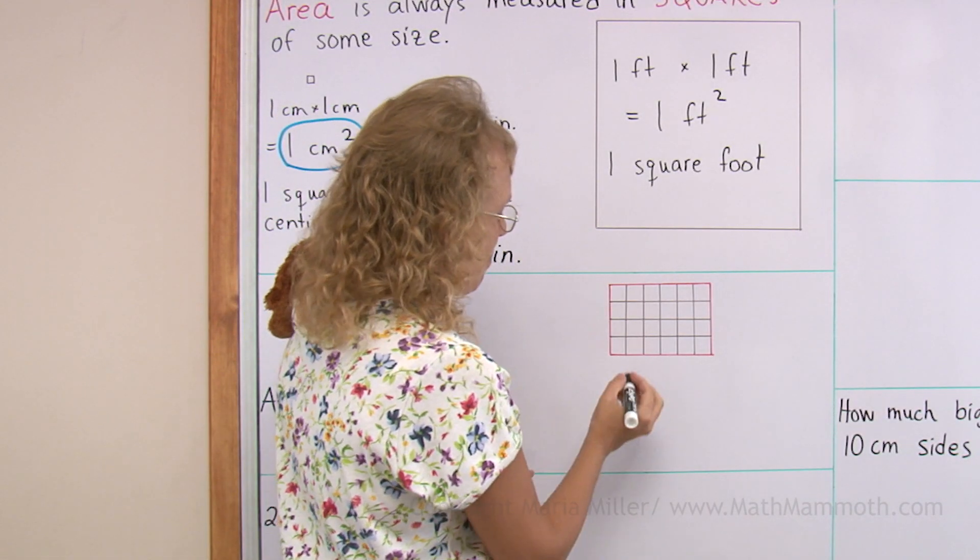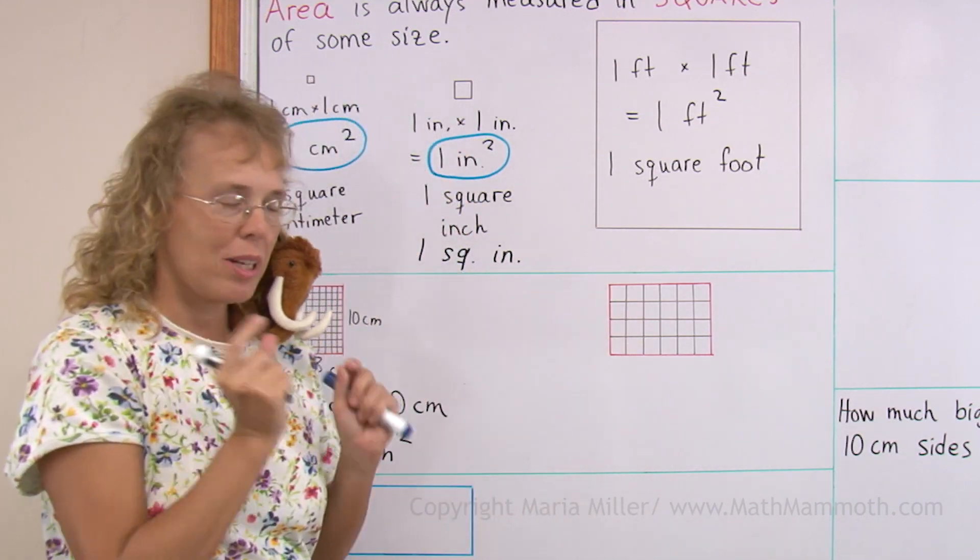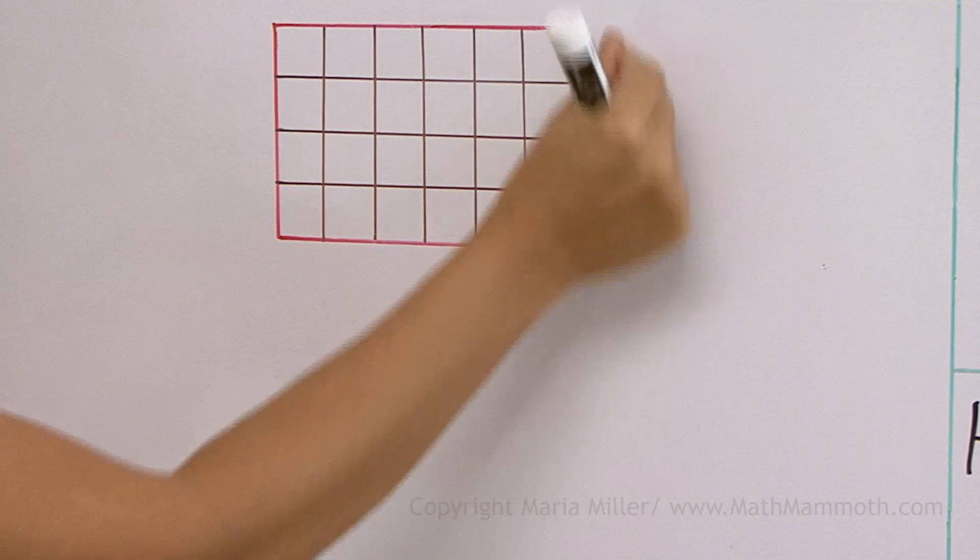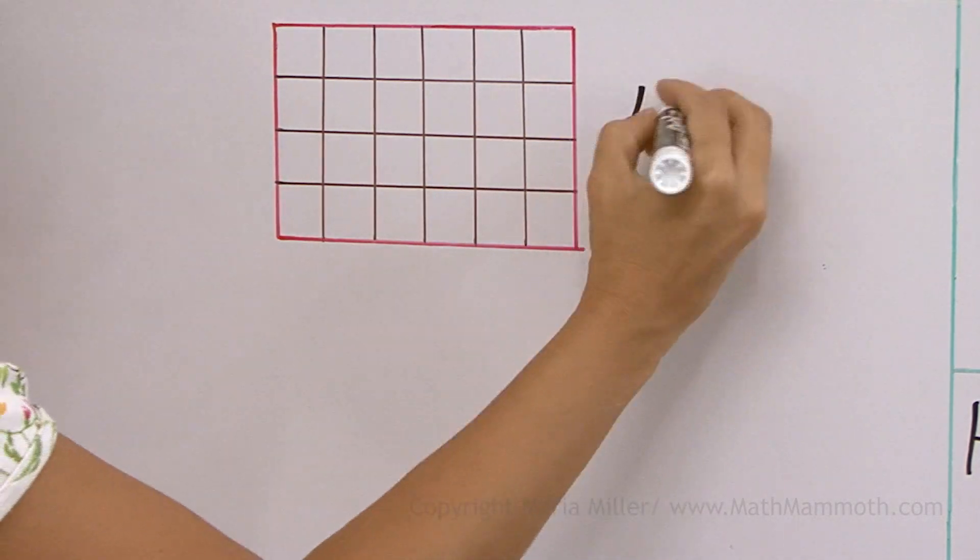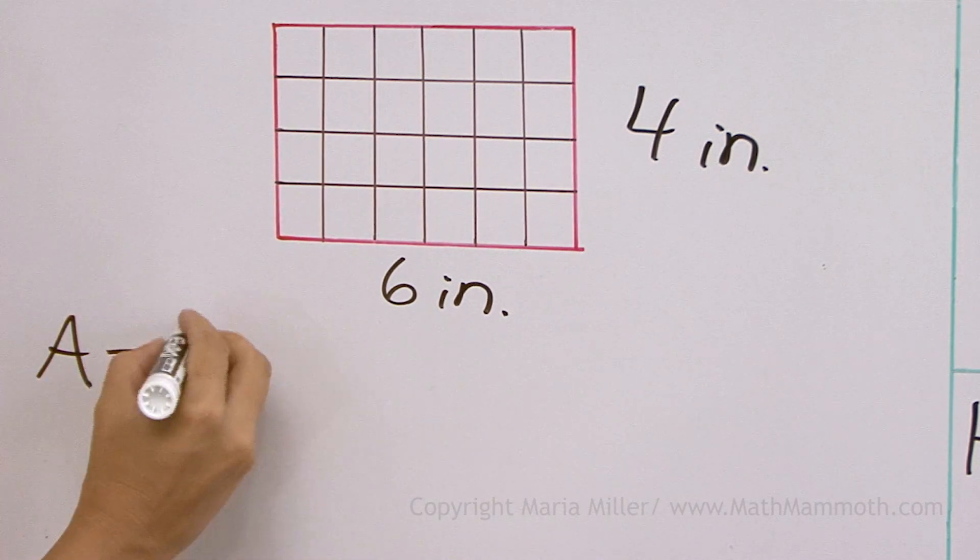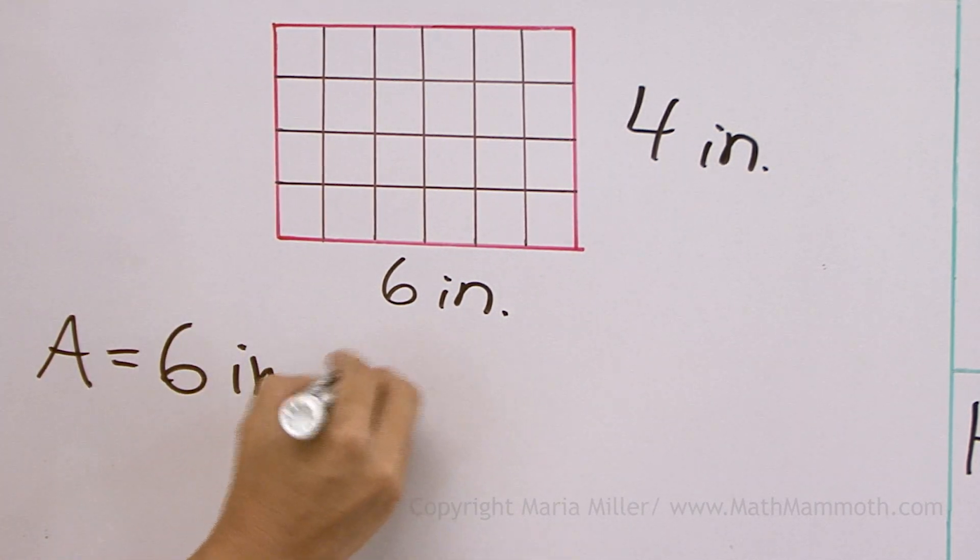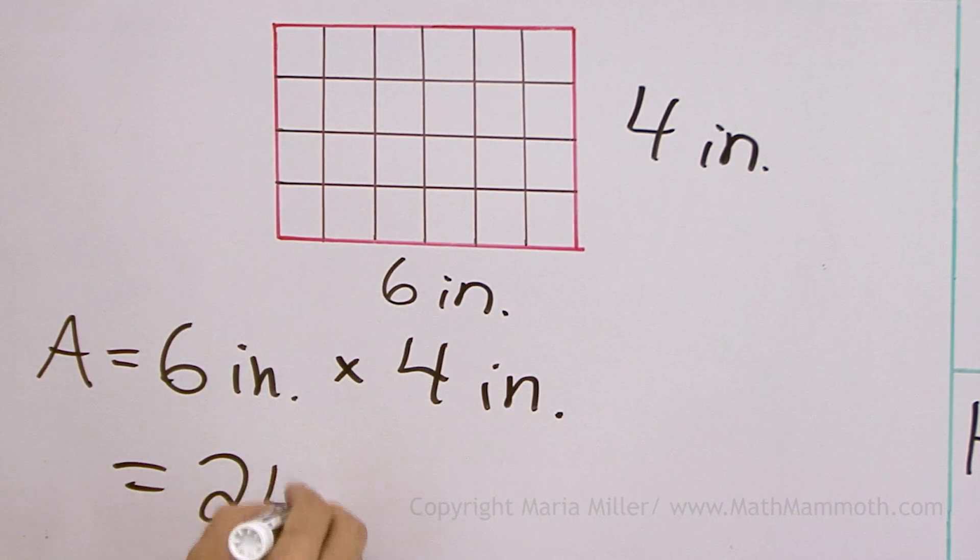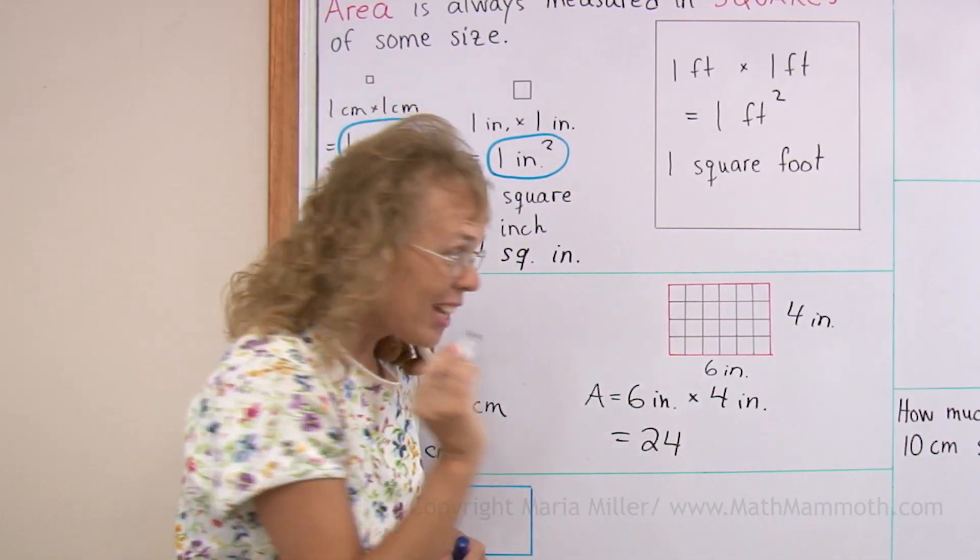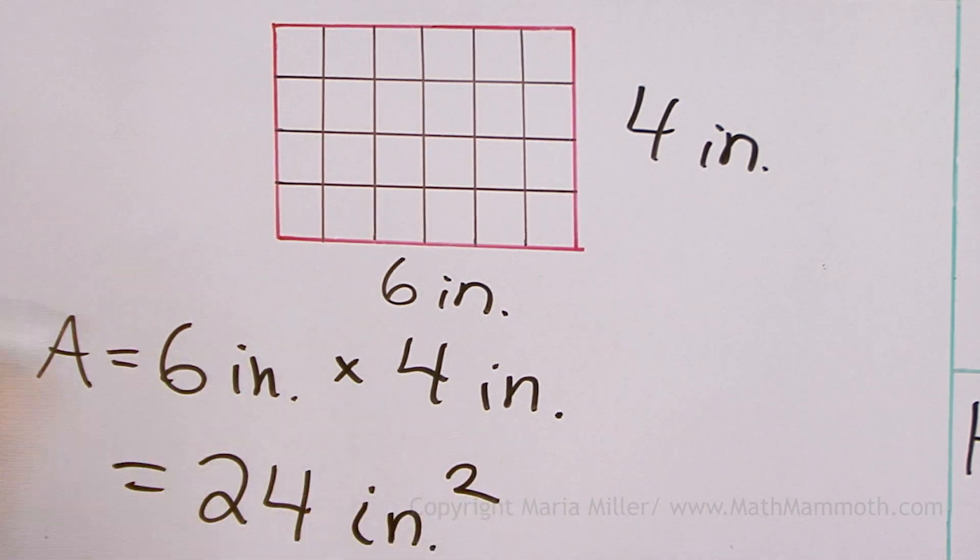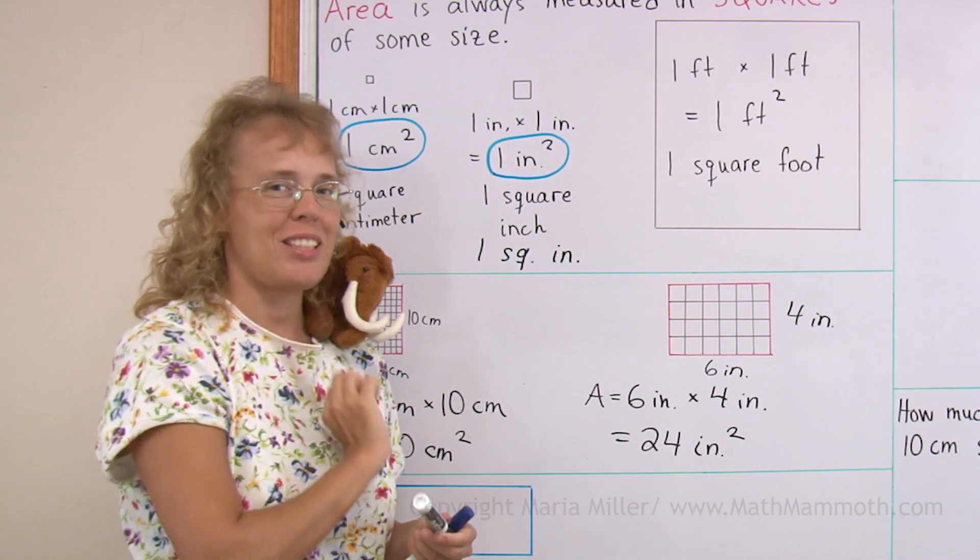And this one has inches or square inches. Here I have 6 inches this way and 4 inches that way. So to find the area, I multiply those: 6 inches times 4 inches. And then we get 24 square inches. So here I have to write the in and then square it, this elevated 2. Remember that always.